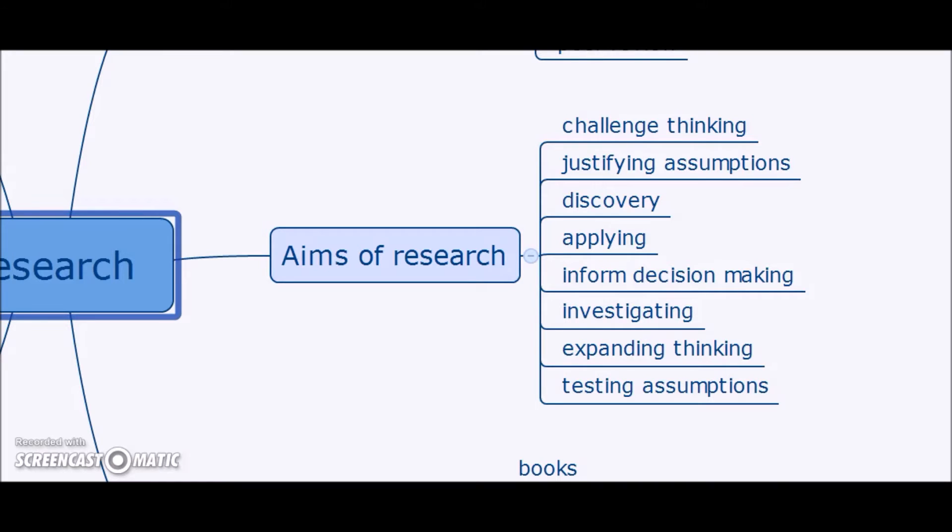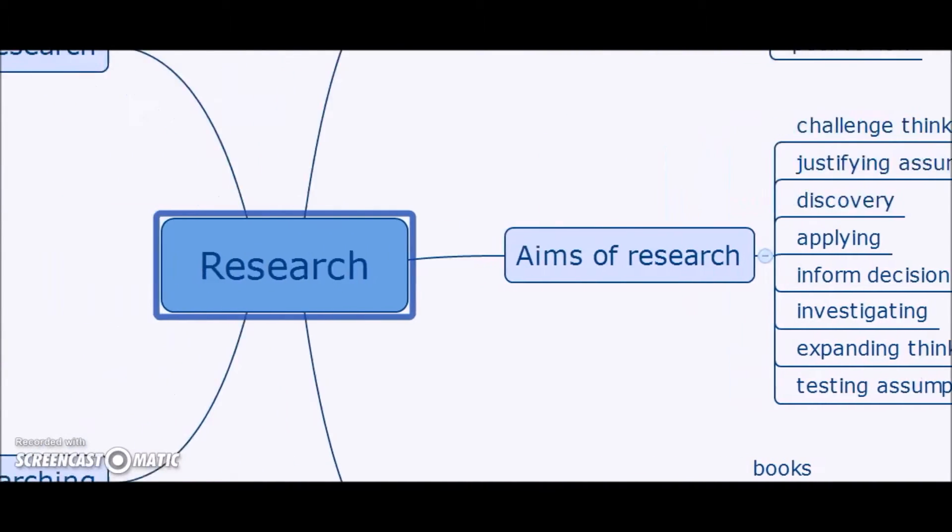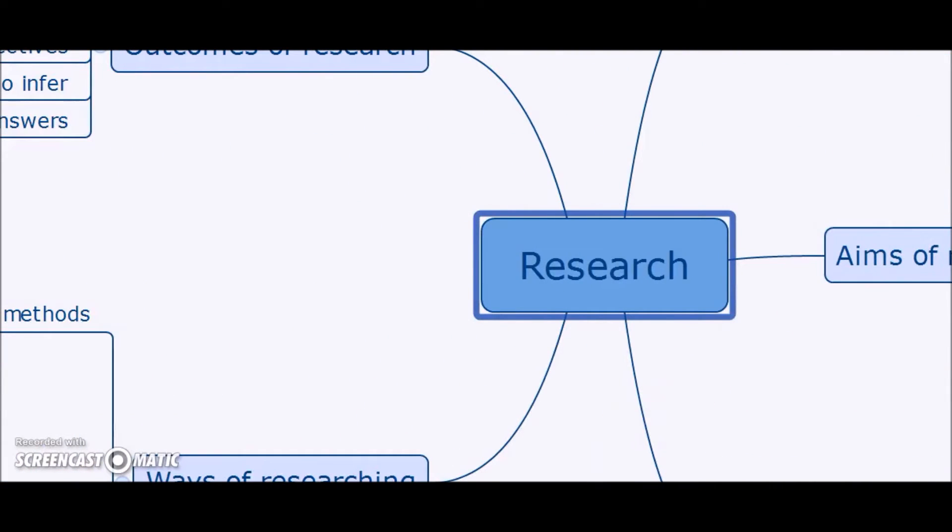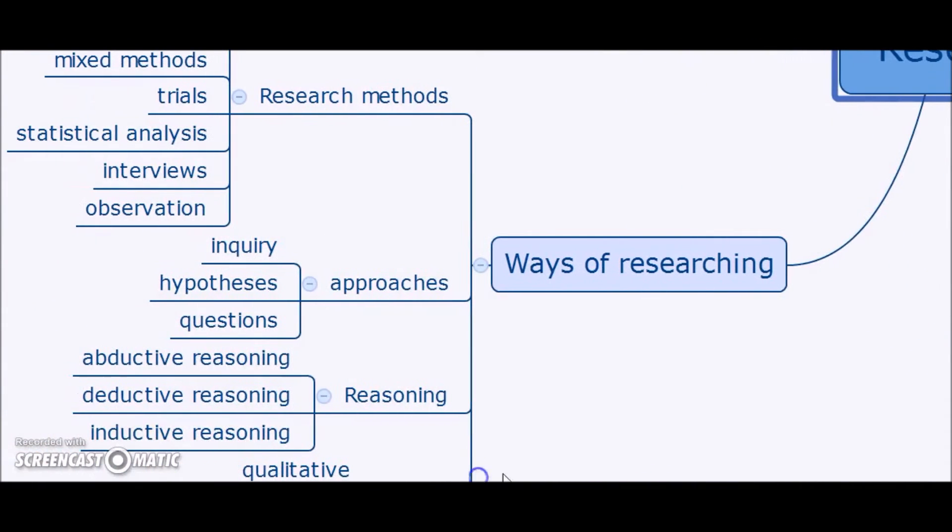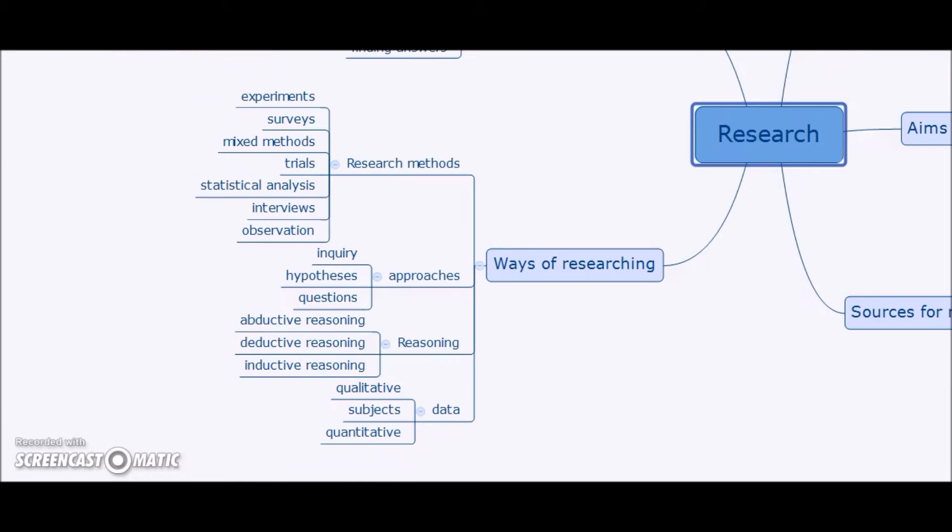So what might we think about next in terms of these research components? Well, I guess the next thing we might consider would be ways of researching. So assuming we know what it is we want to research in terms of the general type of research we're going to do, what ways would we actually do the research? Well again, there were lots of ideas that came up. So we had things that were to do with research methods, approaches, ways of reasoning, different types of data.